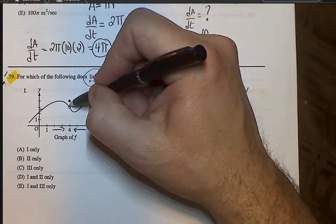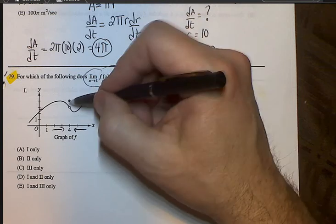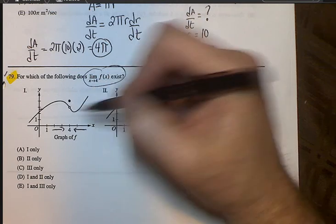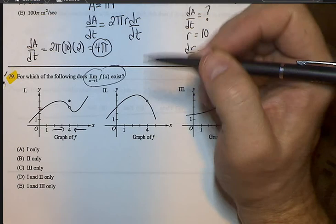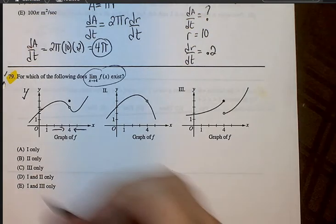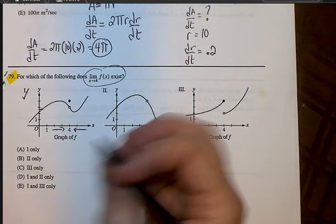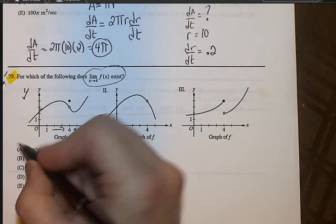When you're coming into 4 here, you're approaching the same number. So the limit in number 1, even though it's an open circle, the limit's going to exist because it's as you approach it. So this one's good. So right away, I'm going to go down to the choices. And whenever you have one of these and you have these as the choices, you've got to cross out once you know something. So we know 1 is true, so A can still be an answer.